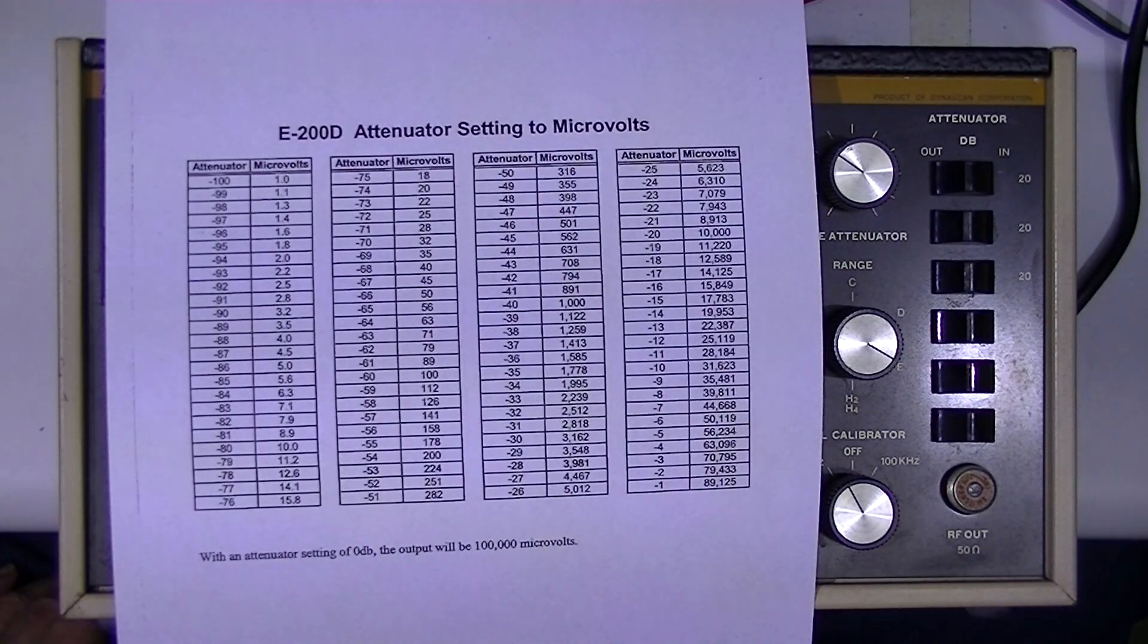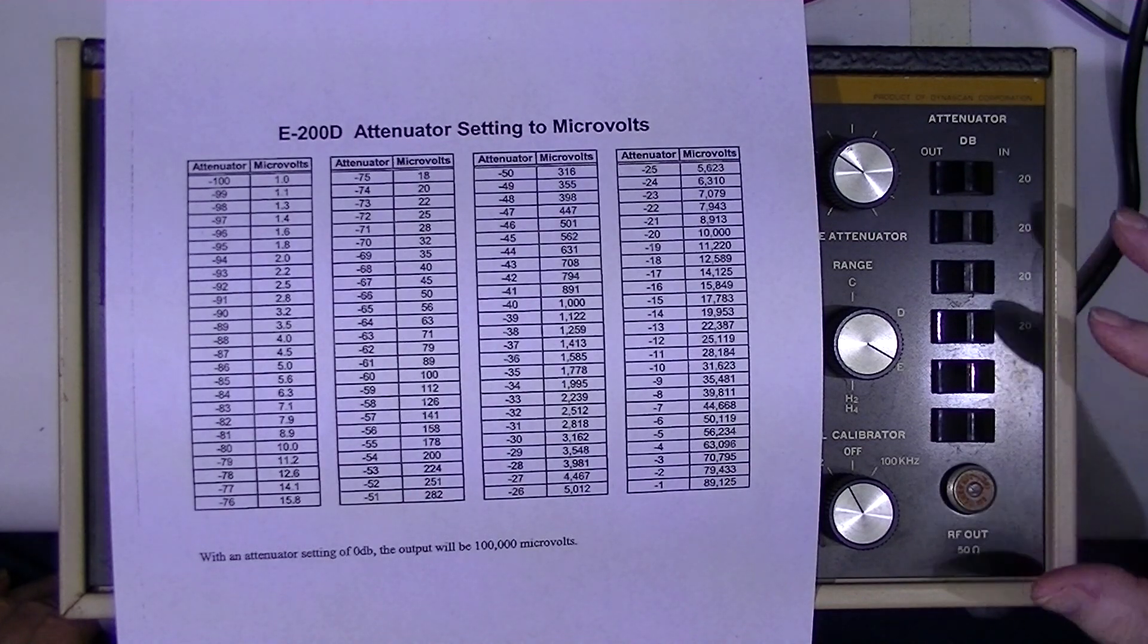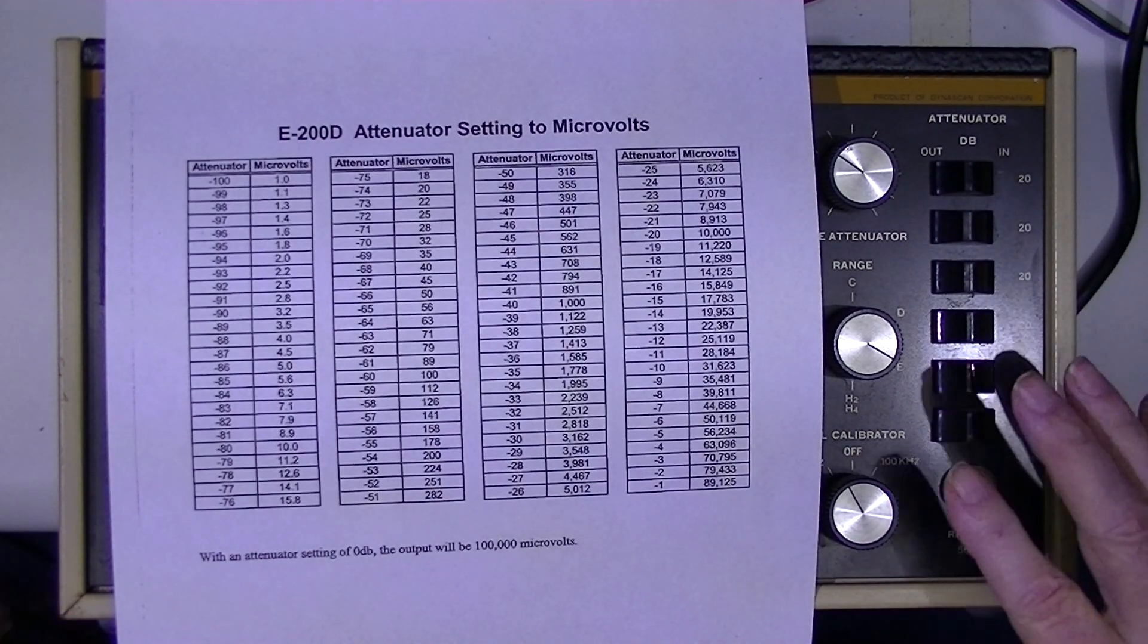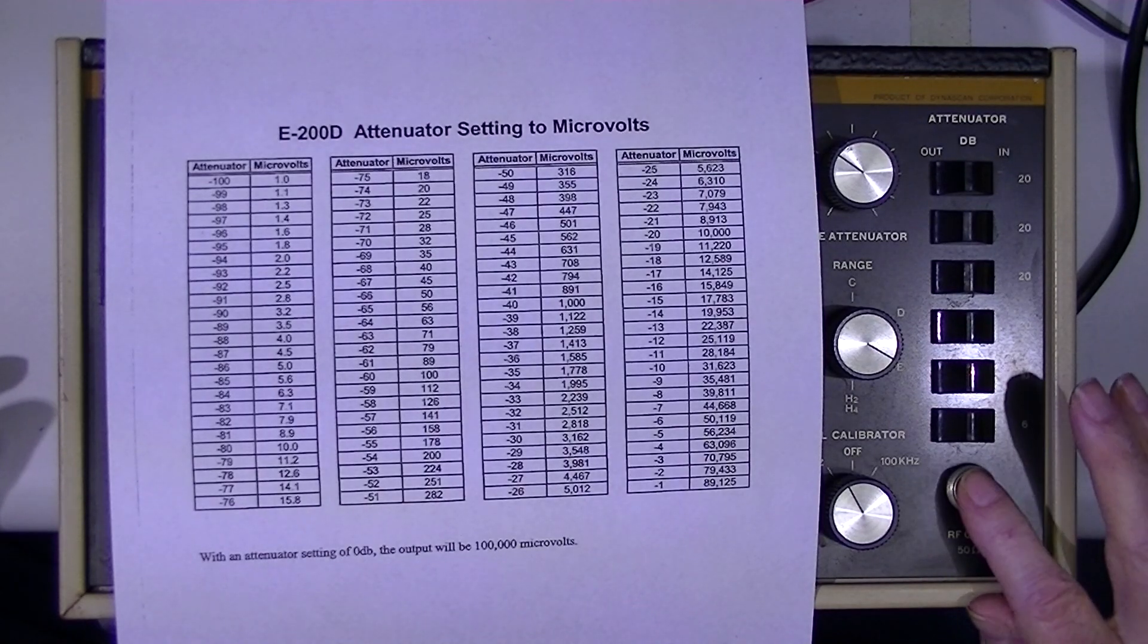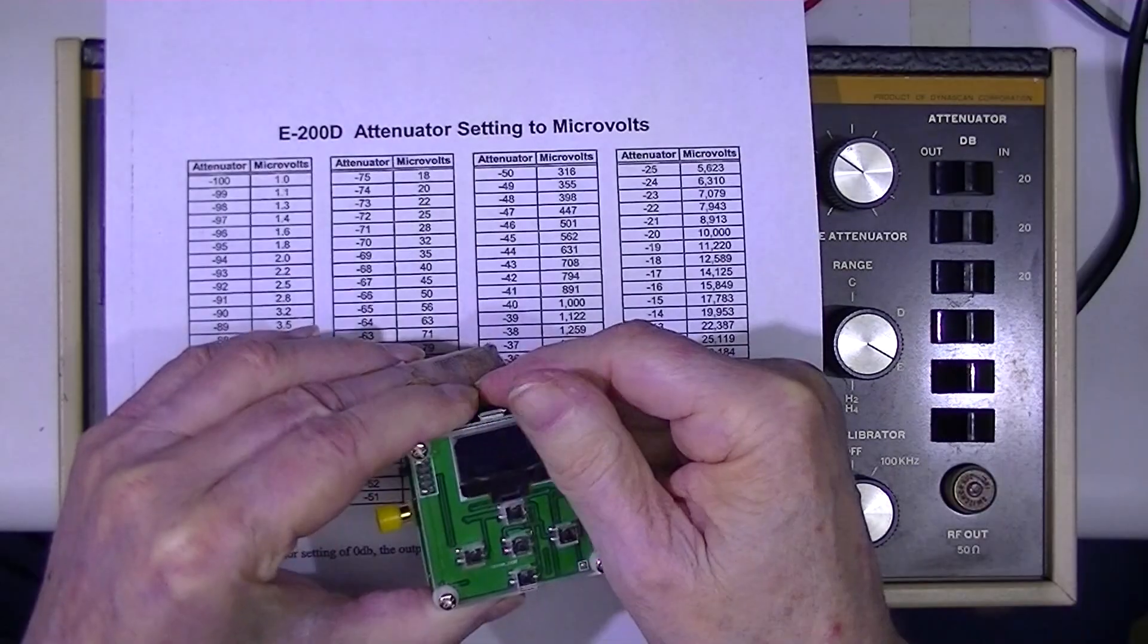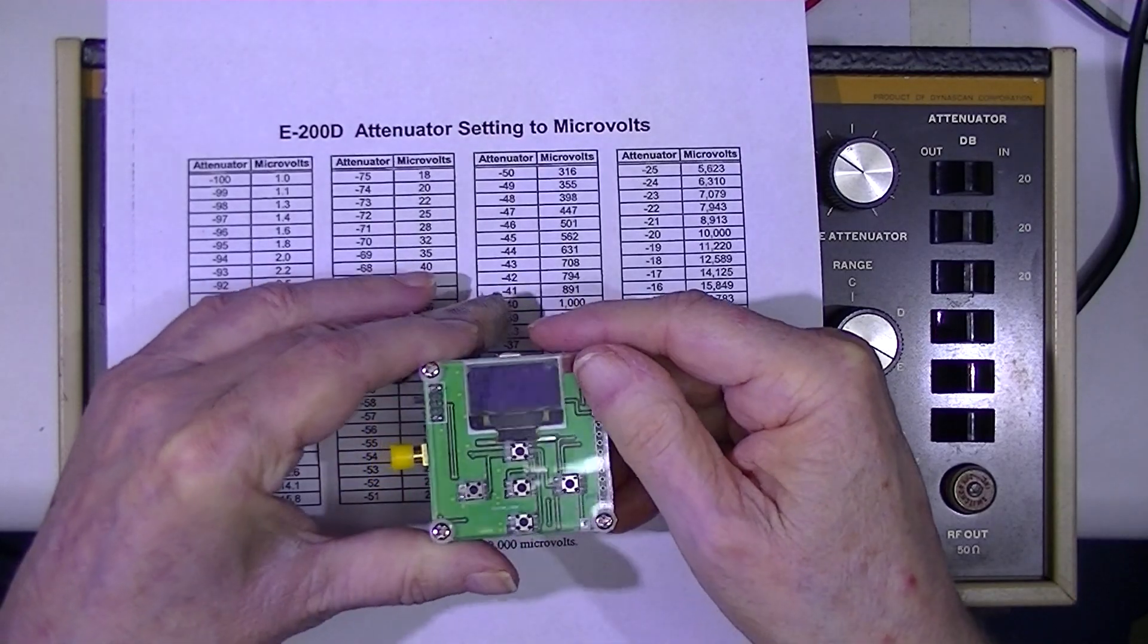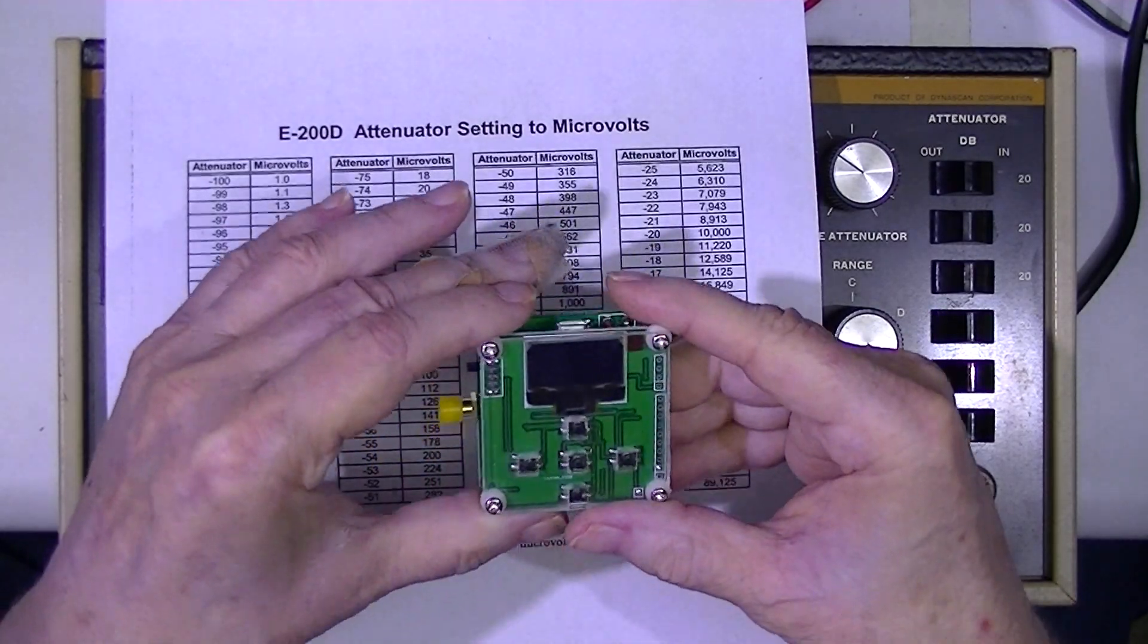The output is designed to be terminated in 50 ohms. So if I know this output voltage and these are all in RMS, I can convert this output to dBs. And that will allow me to test this little wattmeter.